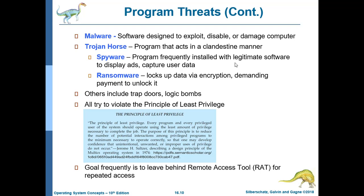The goal for program threats is to leave behind a remote access tool, or RAT, for repeated access. A RAT is a backdoor daemon left behind after a successful attack to allow continued access by the attacker. This tool can be used to make the compromised computer a botnet for denial of service attacks, without the owner knowing.